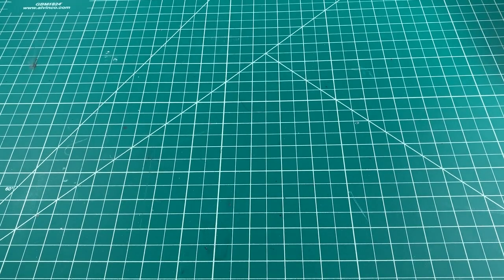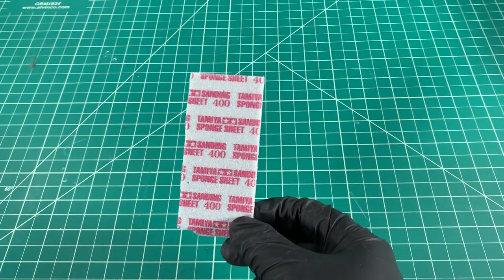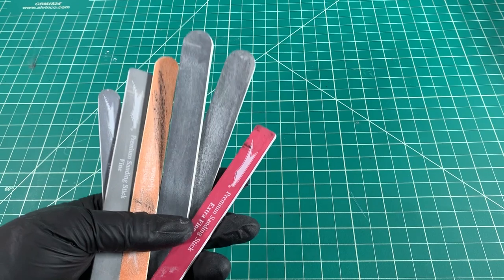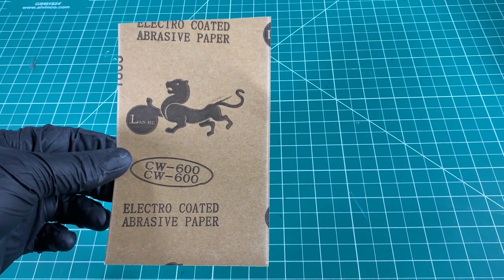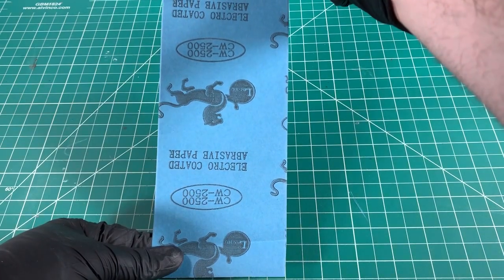Some materials we're going to be using today to accomplish the finished look of the part are sanding sponges. We'll be starting with 180 grit all the way up to 400 grit, various sanding sticks, flexible sanding sticks, and automotive sandpaper starting with 600 grit ranging all the way up to 2,500 grit.